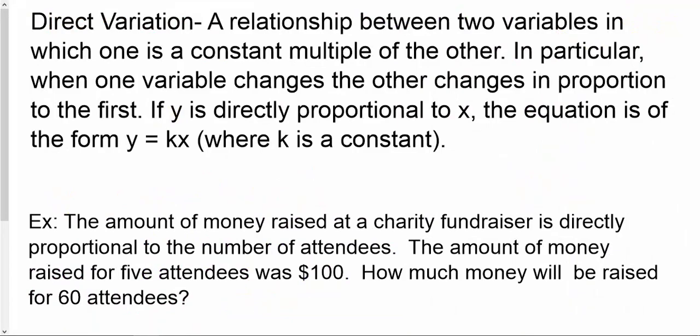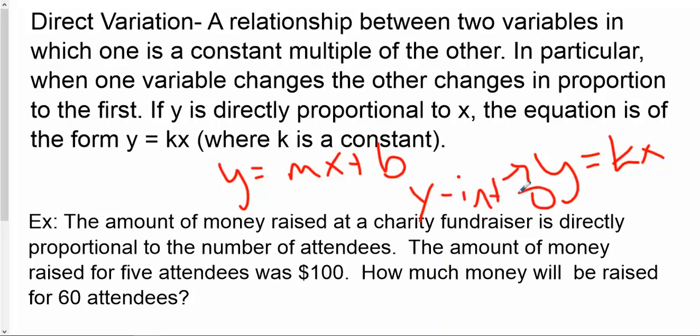Okay. So, direct variation. Direct variation is a relationship between two variables in which one is a constant multiple of the other. In particular, when one variable changes, the other changes in proportion. The best way to think about this, guys, is that a direct variation problem is just like a linear function. They're both linear, right? Y equals MX plus B and Y equals KX are both lines. The only difference is this always has a Y intercept of zero.